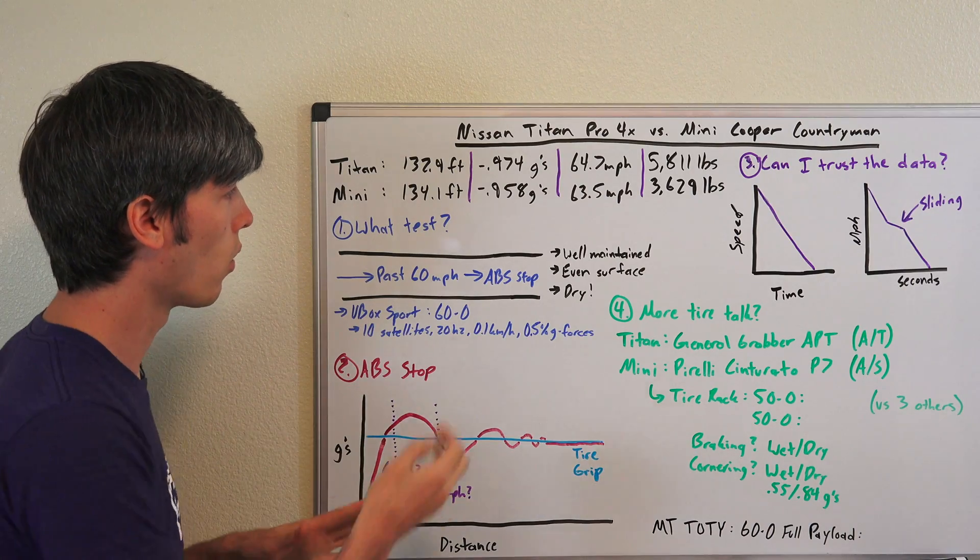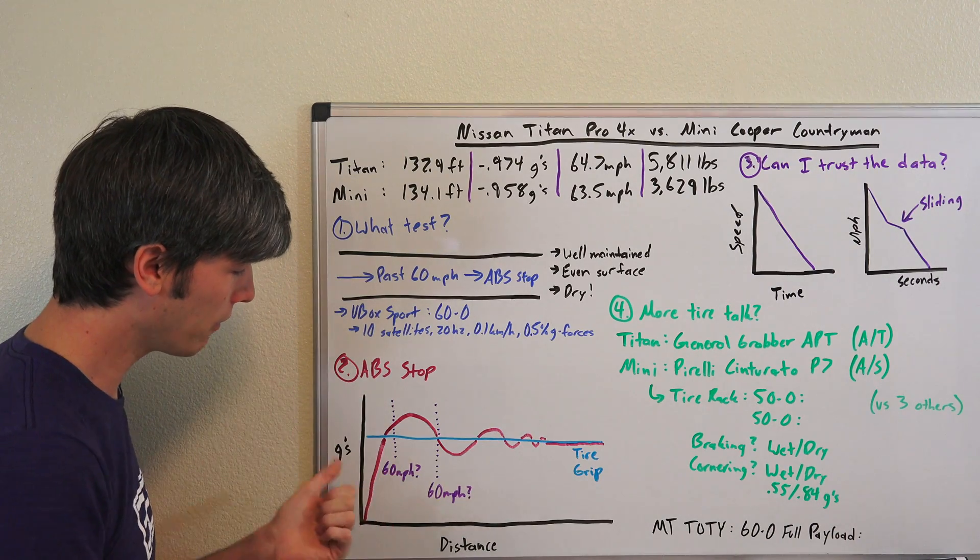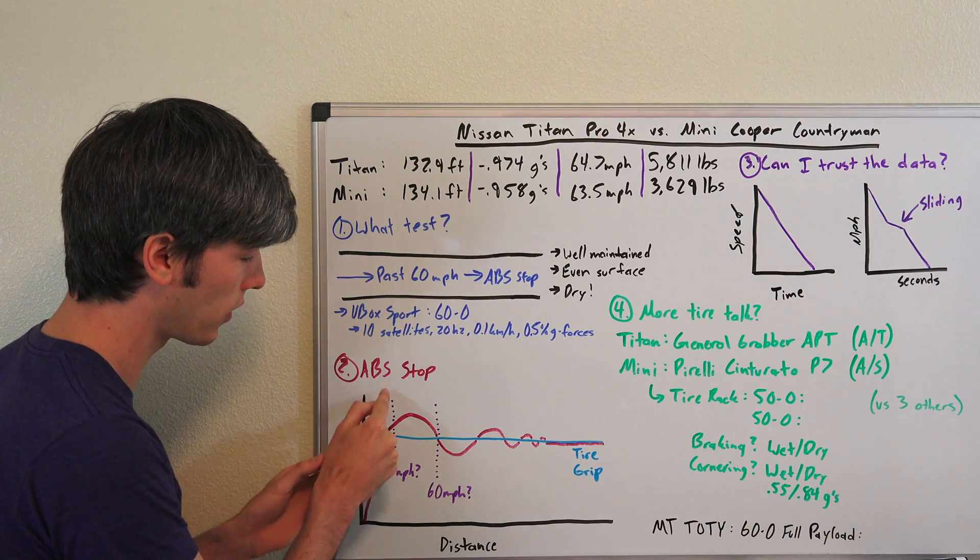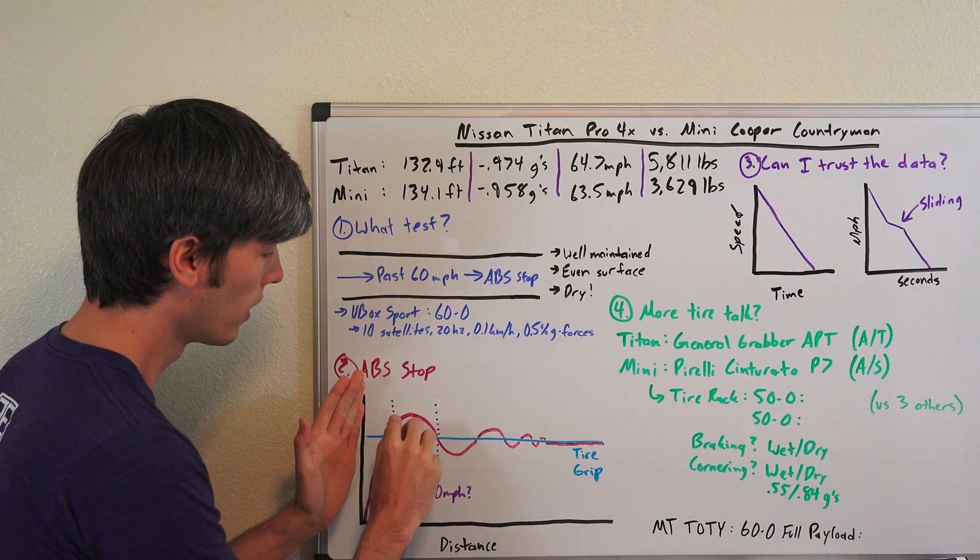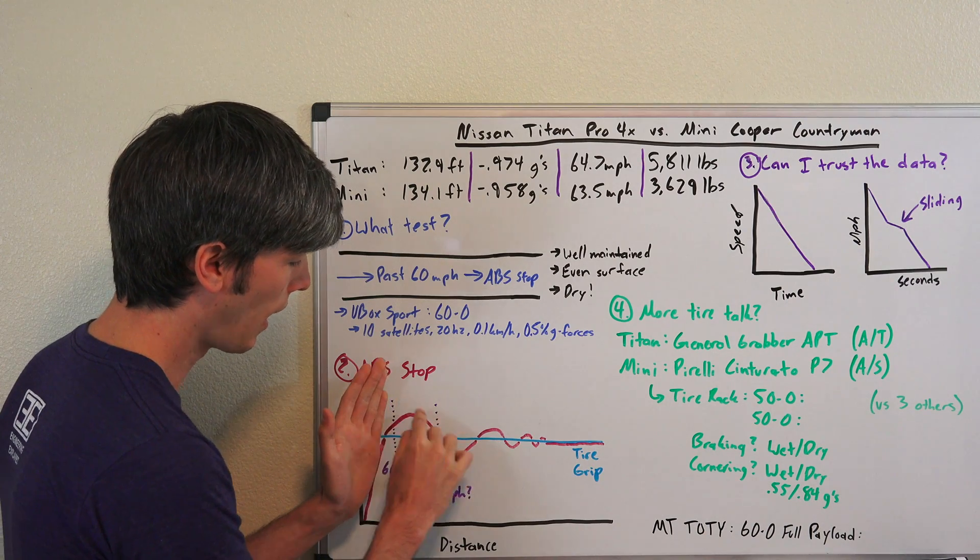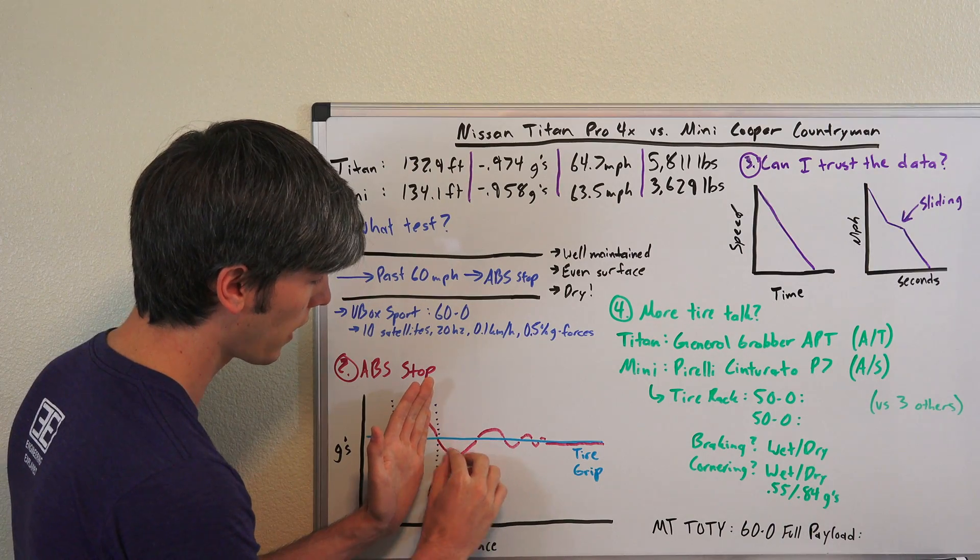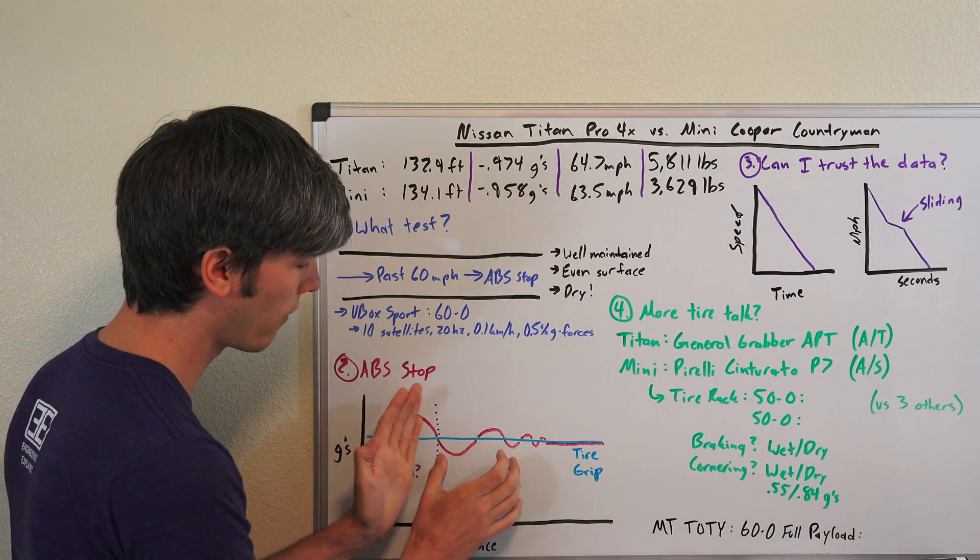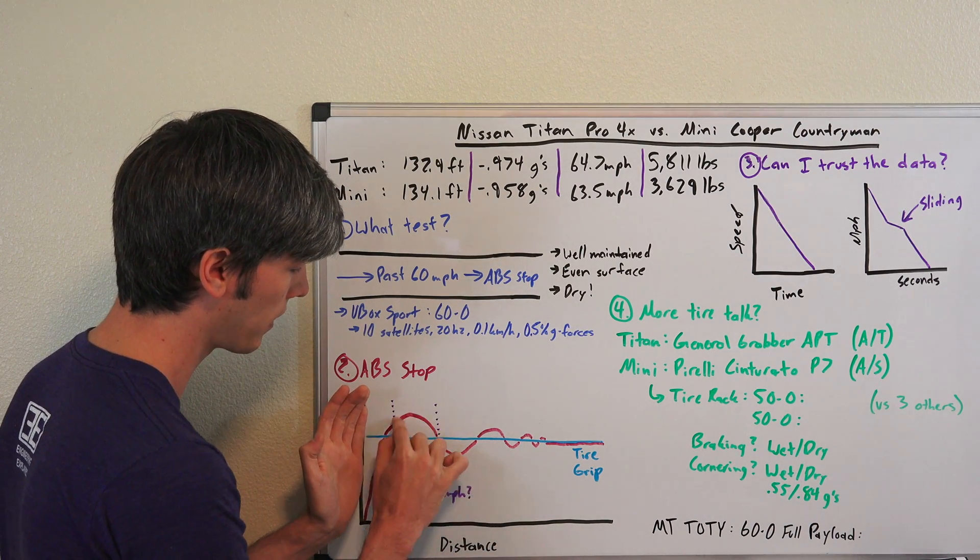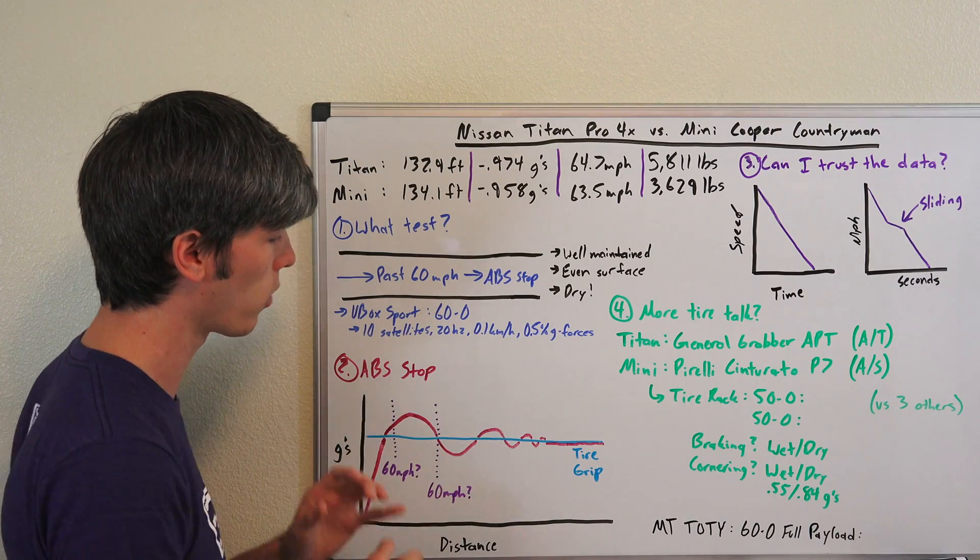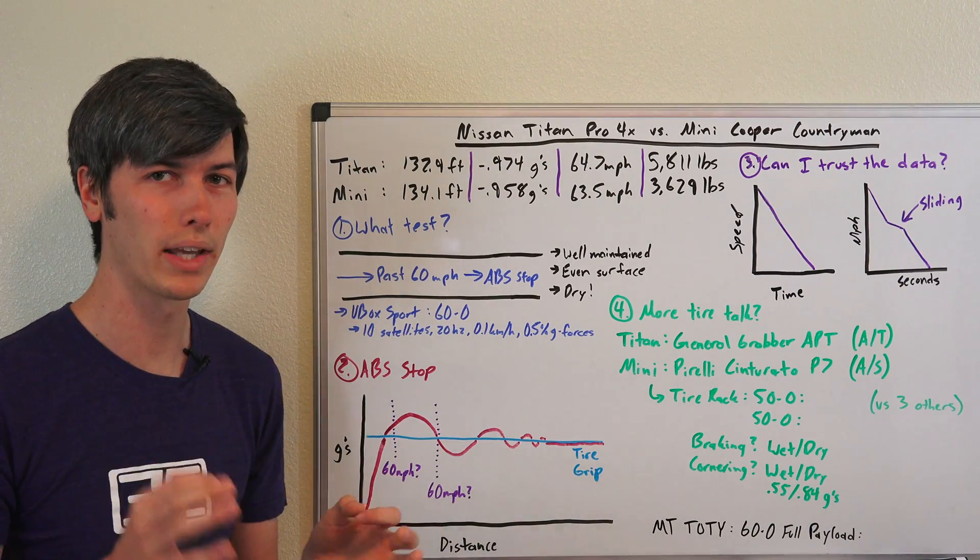When you slam the brakes is extremely important for knowing how fast the vehicle stopped. If you hit 60 miles per hour where you've got higher peak grip versus where the tire just locked up, you're going to have a longer stopping distance. At 60 miles per hour every tenth of a second you're going 8.8 feet.